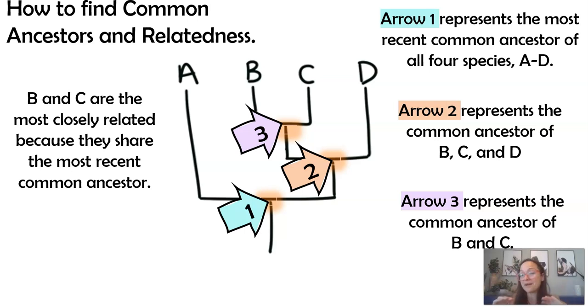Another important thing, or fascinating thing, is to be able to see who is more or who is the most closely related to whom. When we read this, B and C, if we remember that the lines represent time, and at the bottom is the past, and the top is the most recent, as we move through time, we can see that arrow number three is closest to the present day. Therefore, group species B and C diverged the most recently. Therefore, they are the two species that are the most closely related in this phylogenetic tree. They have the most recent common ancestor.